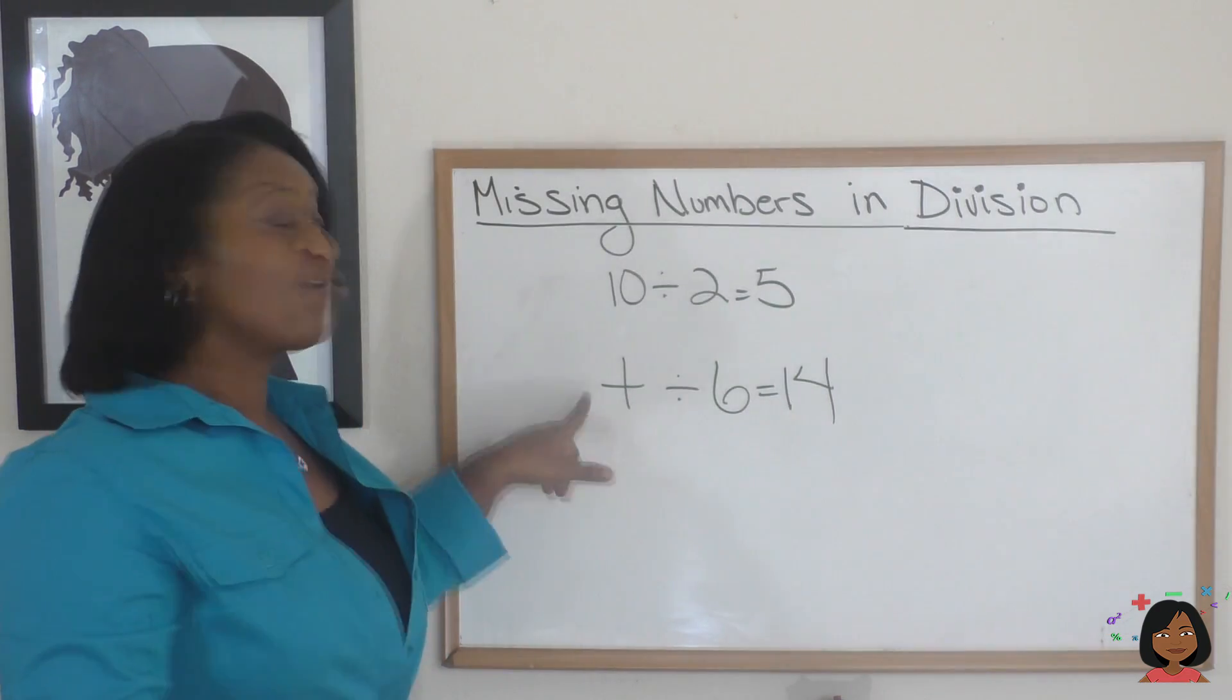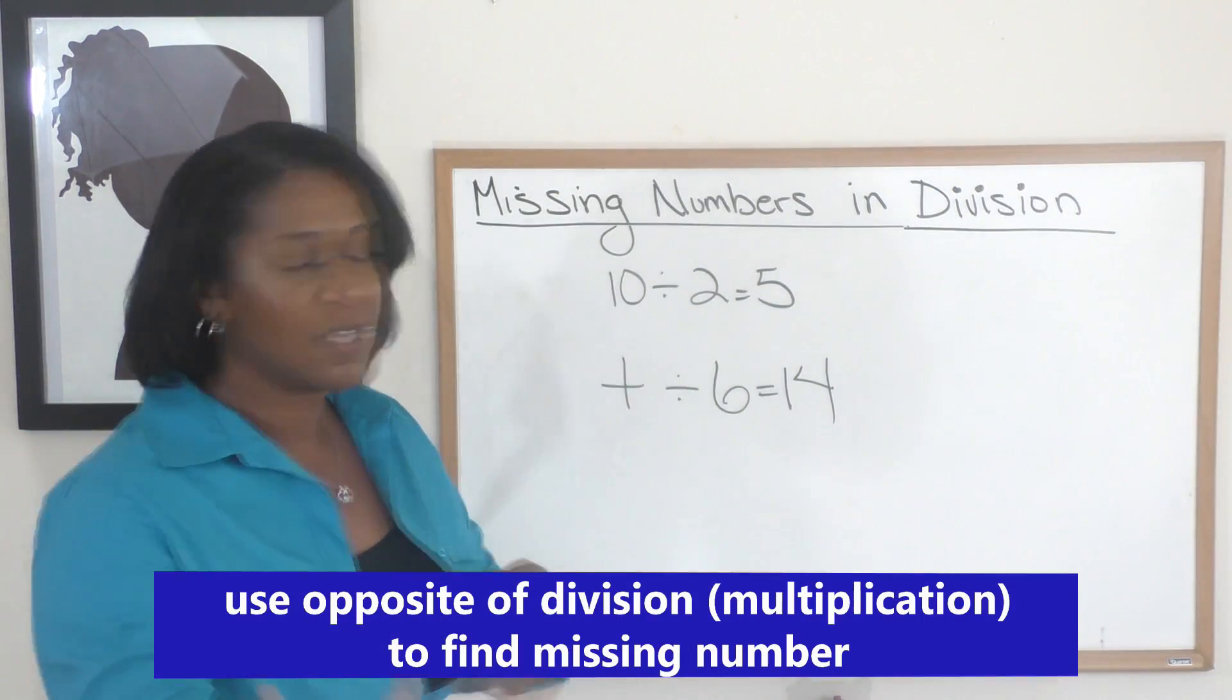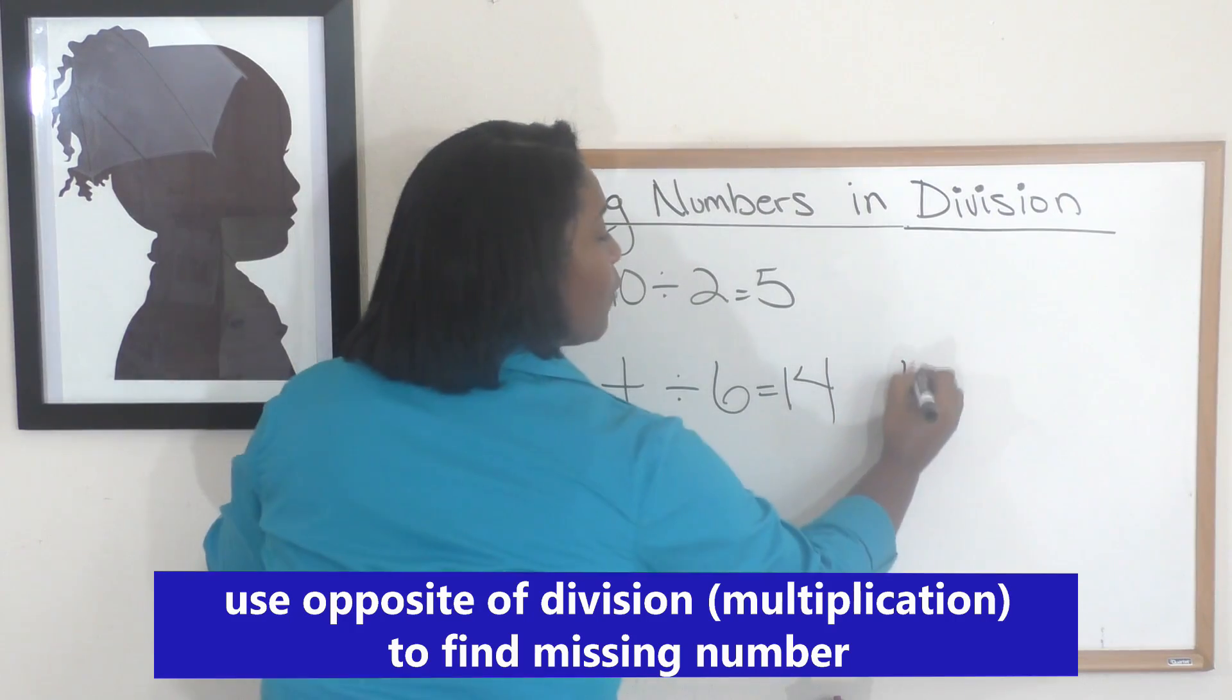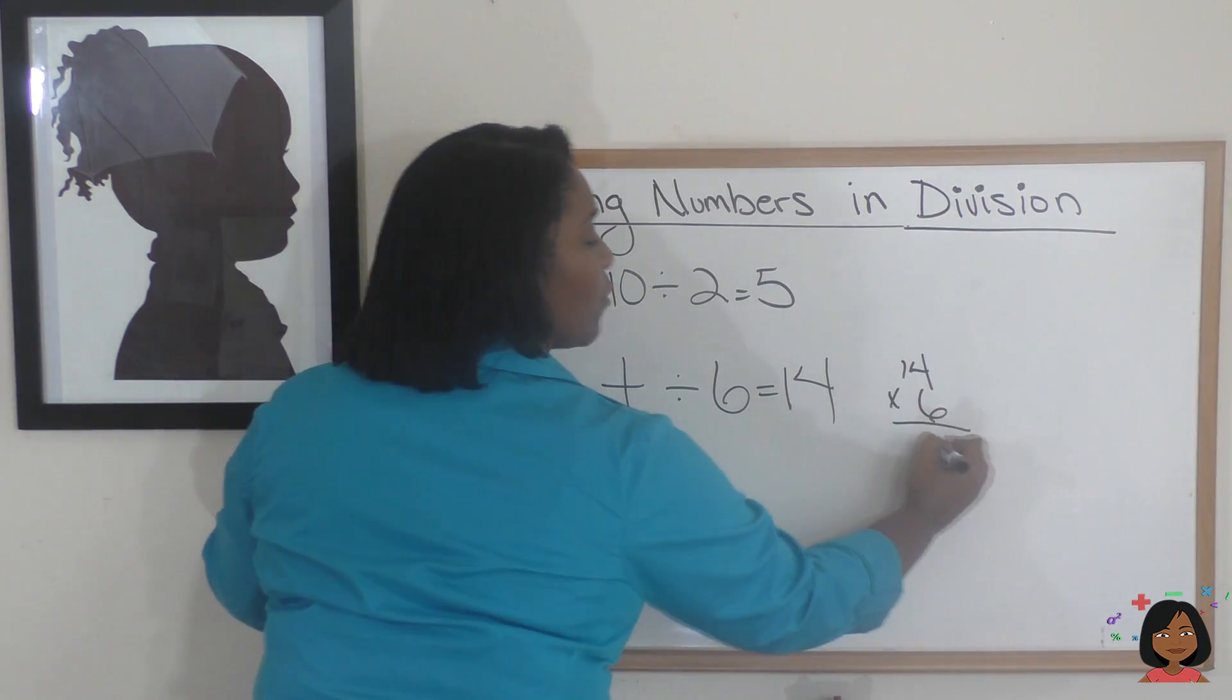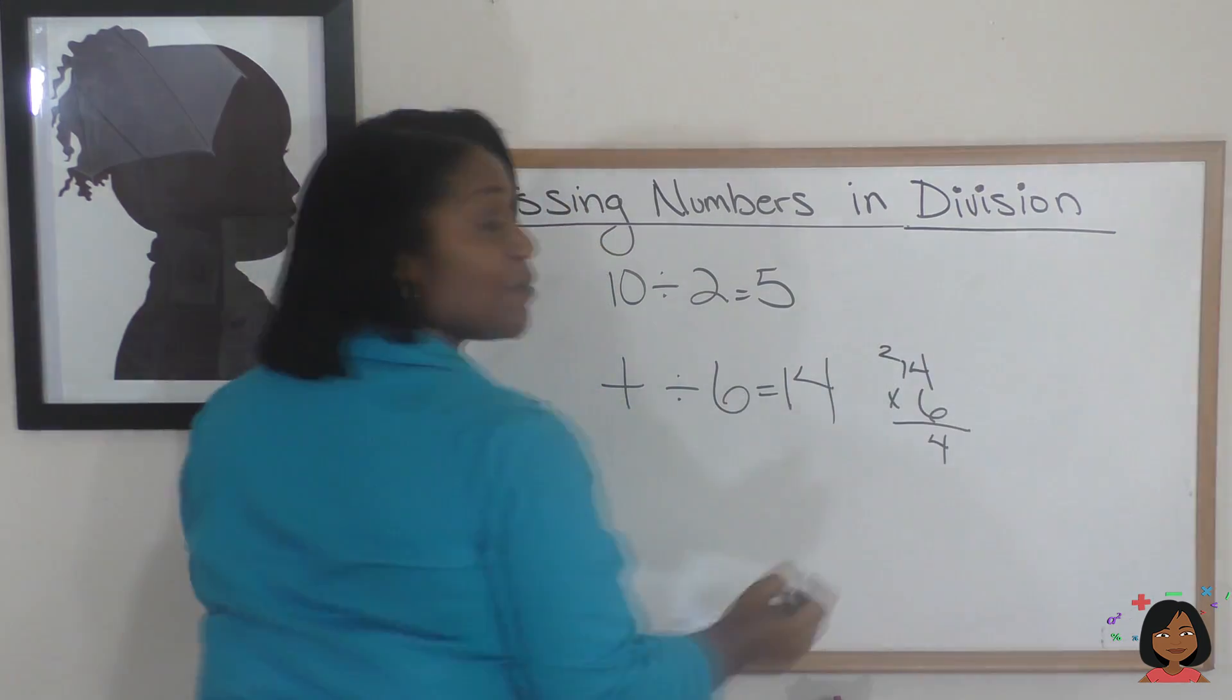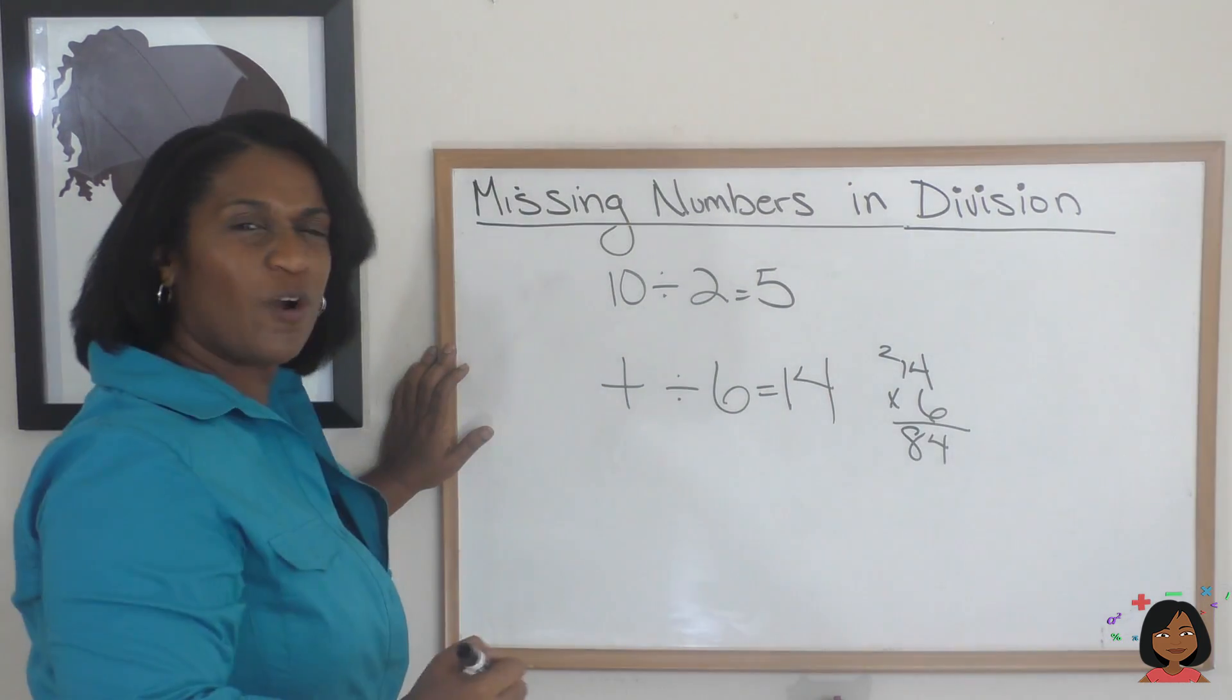Same kind of problem. We're trying to find our dividend. We can use multiplication, so let's do it. 14 times 6. 6 times 4 is 24, 6 times 1 is 6, plus 2 is 8, so we have 84.